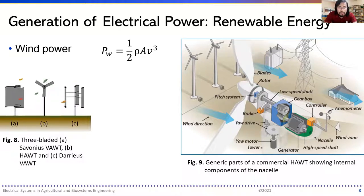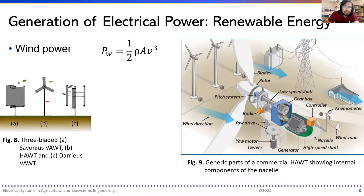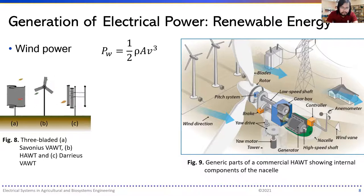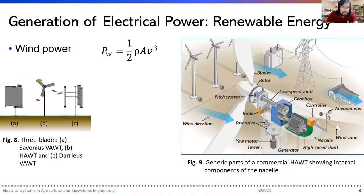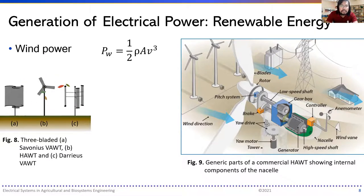Another difference between the two relates to performance: HAWTs require higher wind speeds, while VAWTs operate even at low speeds. The Savonius is the drag type, while the Darrieus is the lift type. There are many differences among the different wind turbines, besides among the various makes and designs of commercially available ones.